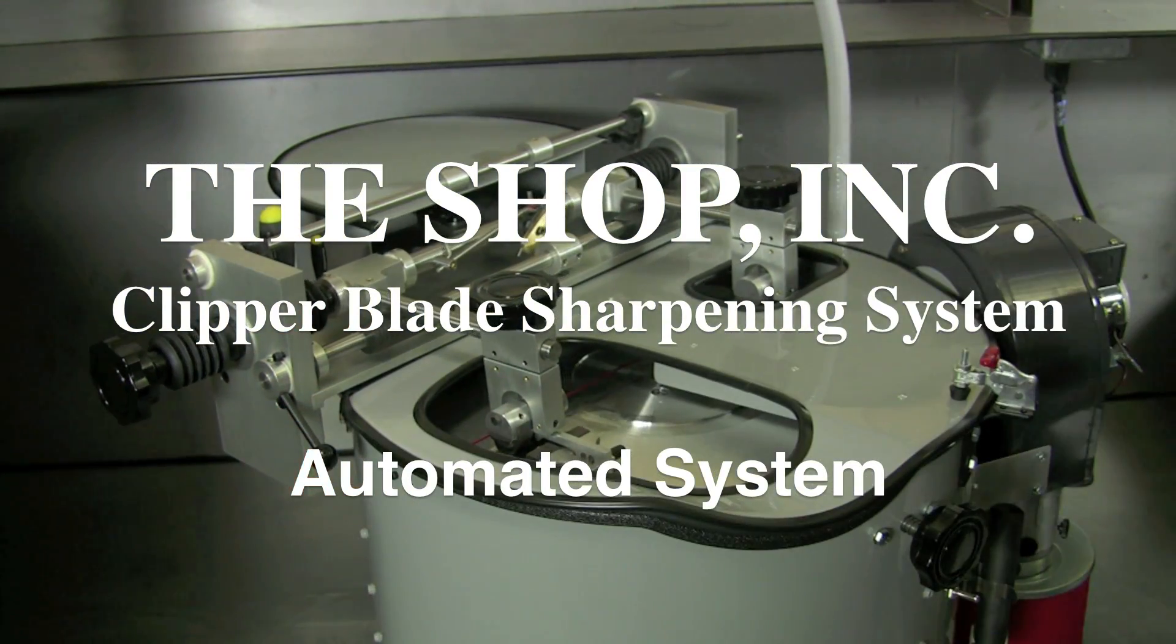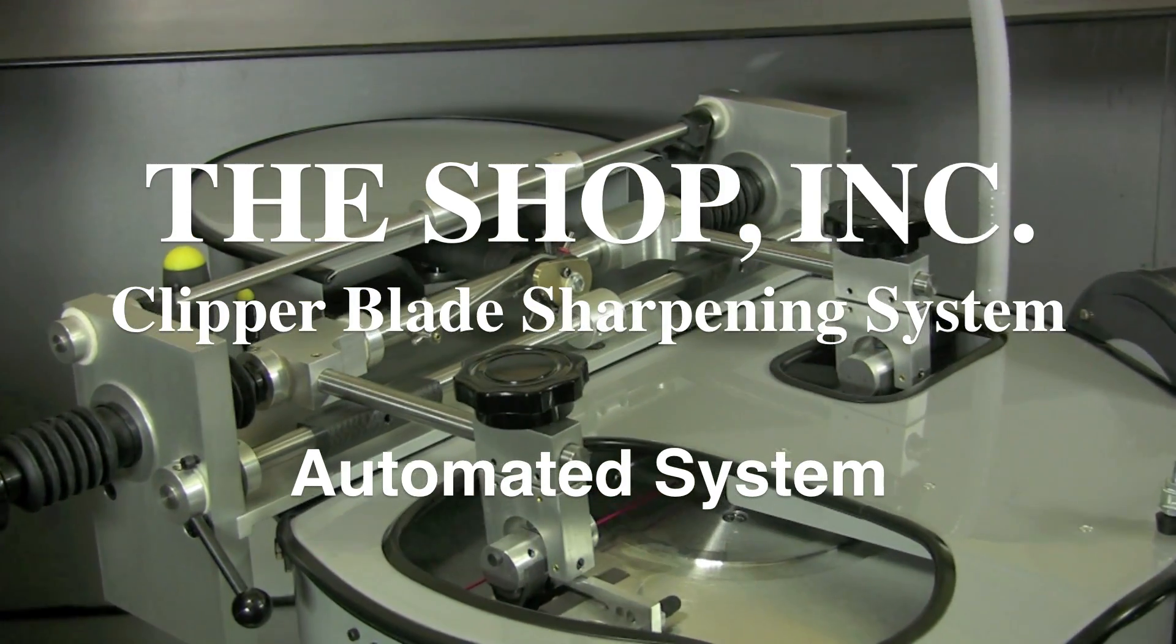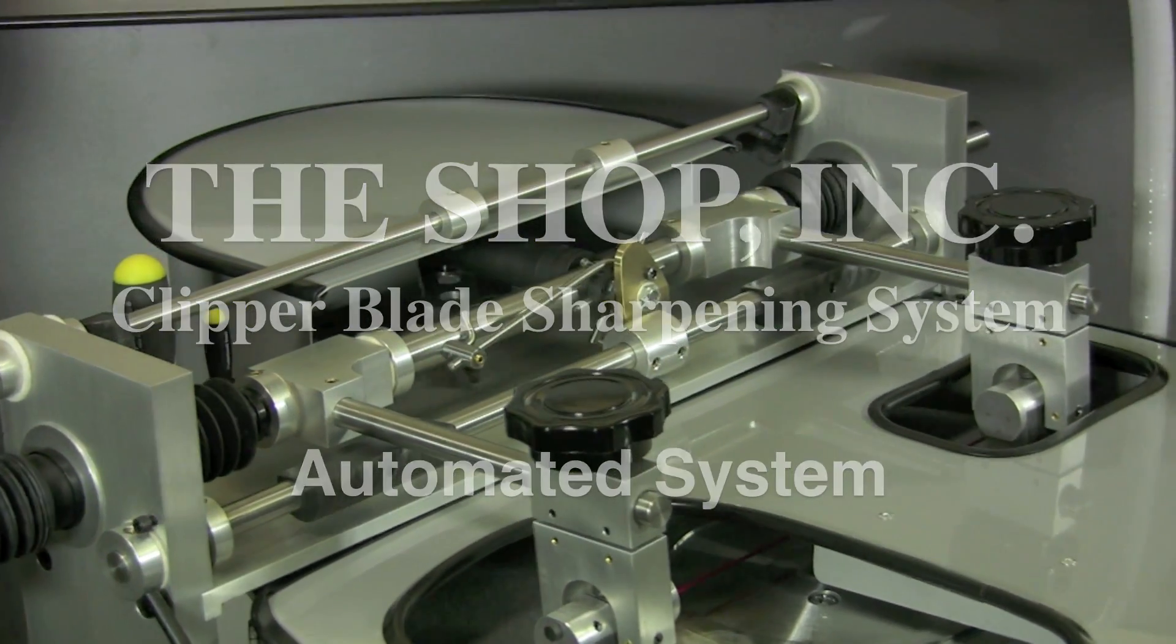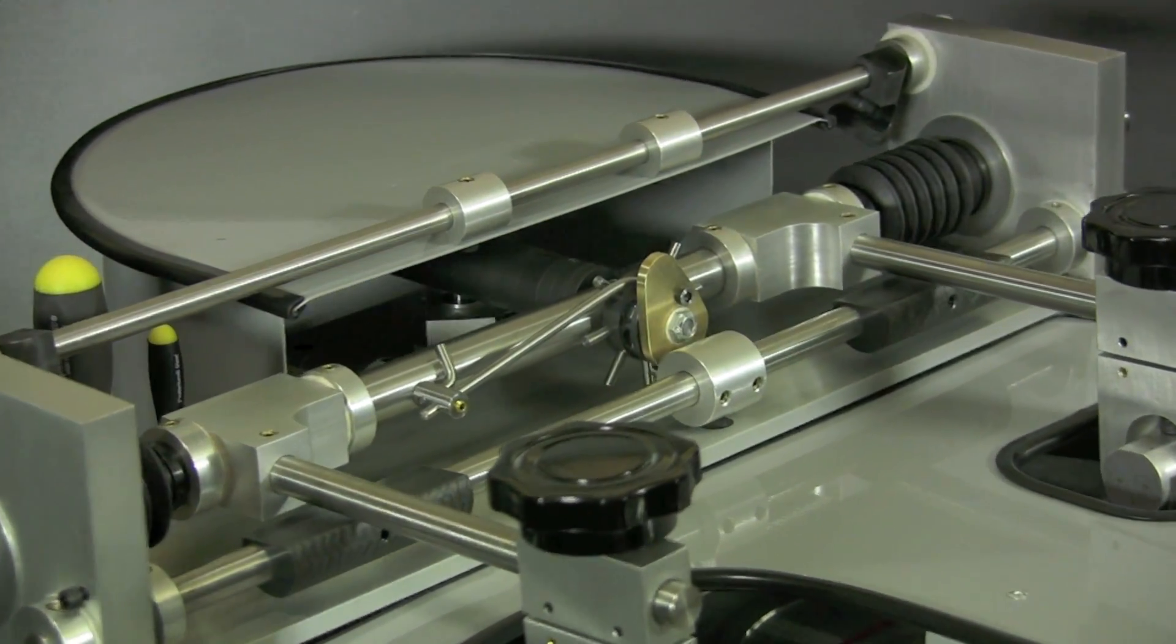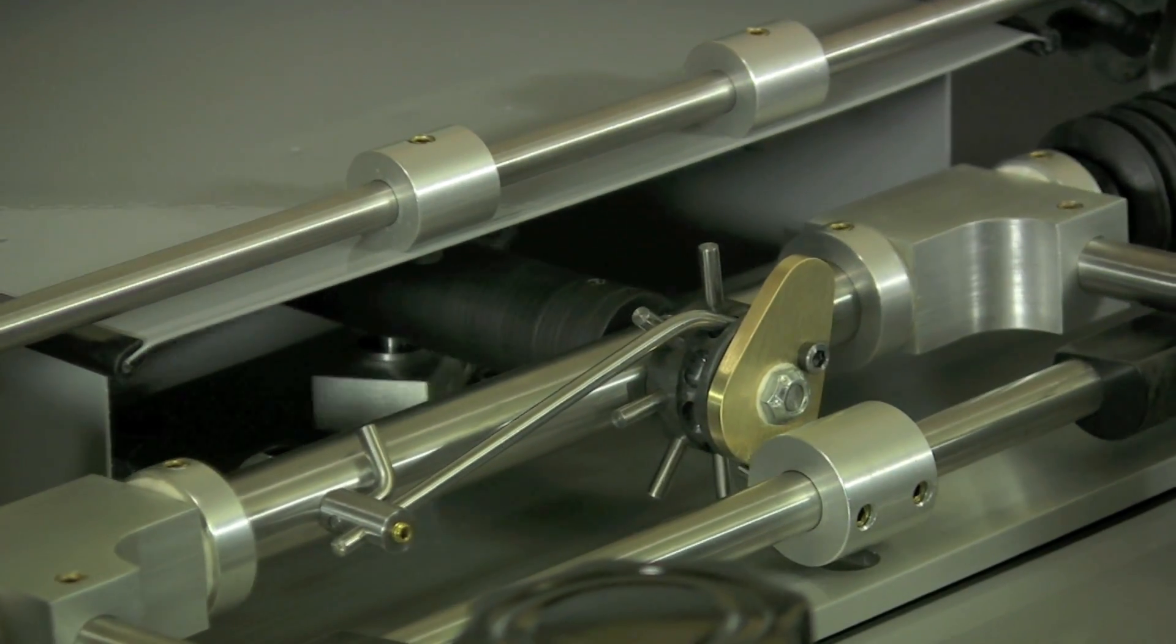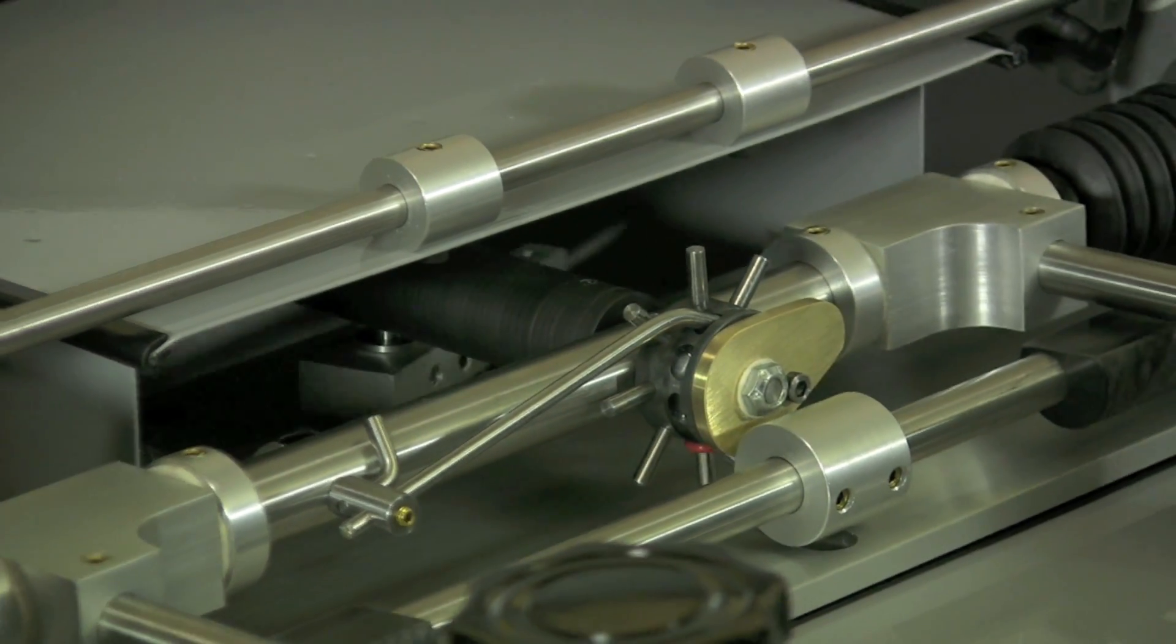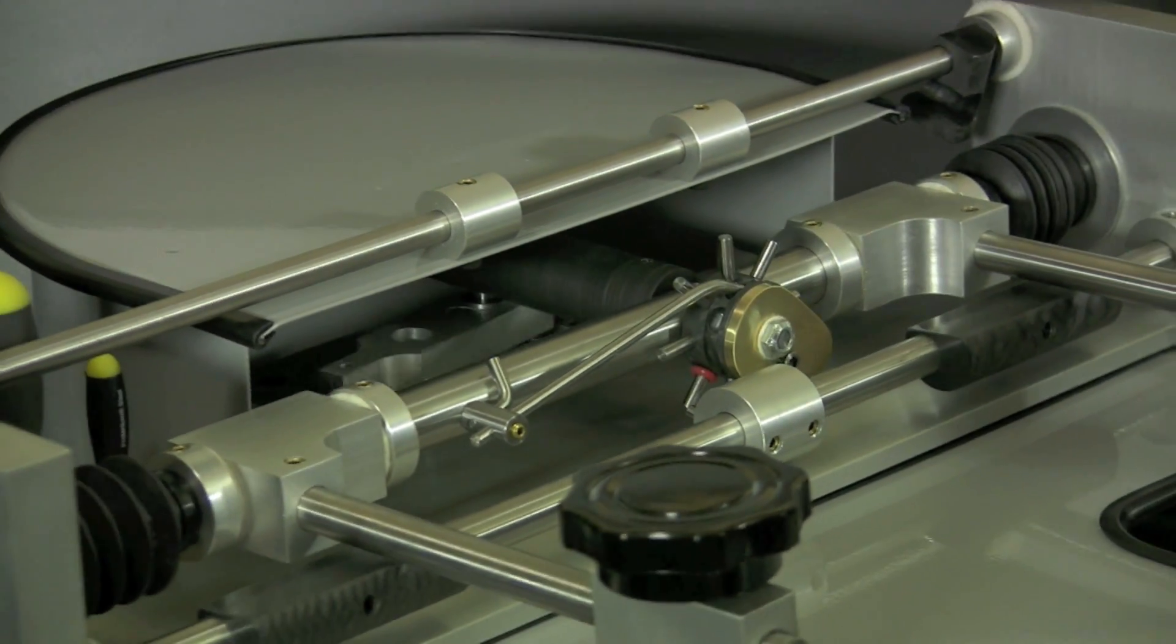The automatic system utilizes the manual machine as the base unit. It enables you to sharpen both the comb and the cutter at the same time for very efficient production.